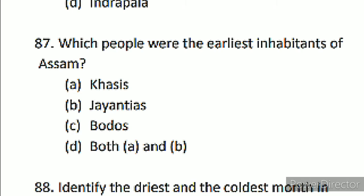Another question asks: who were the earliest inhabitants of Assam? As discussed in the last class, the people from the Mon-Khmer group who used to speak the Austro-Asiatic language, whose descendants are today known as the Khasis and Jaintias, were the first to come and settle in the state of Assam.